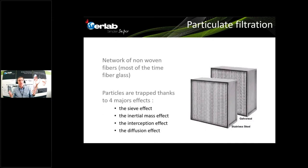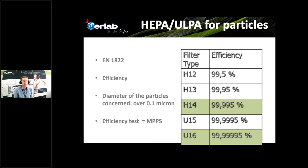The sieve effect traps particles bigger than the space between two fibers. But the other effects allow trapping particles that are smaller than the space between fibers. That is why, when we test HEPA or ULPA filters for particles, we use a complex test called MPPS — the Most Penetrating Particle Size — where we emit a mix of particles of different sizes to determine the most challenging size for the filters. This is not always the smallest particle; most of the time it is between 0.1 and 0.2 microns.